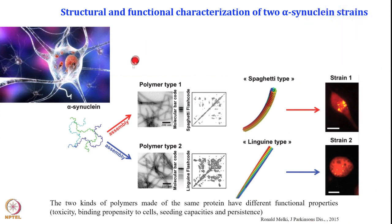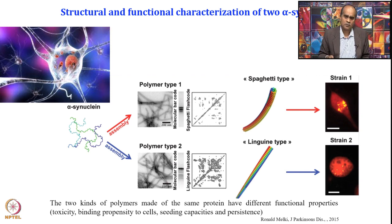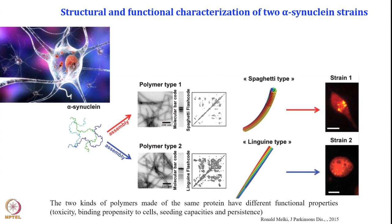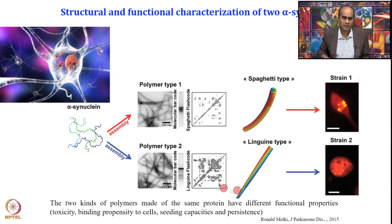Ronald Milkey found that there are various strain behaviors in alpha-synuclein propagation. In neurons where the protein aggregates, it forms two kinds of polymers: strain 1, which was more sheet-like and elongated (spaghetti type), and strain 2, which was more straight but twisted. These different strains show different strain behavior, and various causative diseases are associated with different strains. The toxicity with different strains is different, the binding propensities to the cell membrane are different, and the seeding capacity — how fast they spread — is also different.